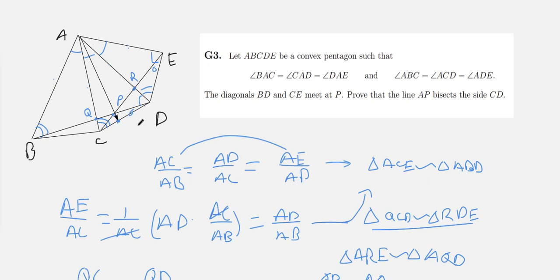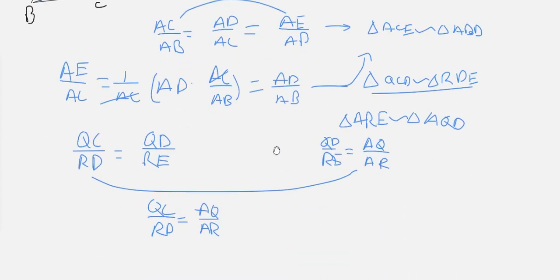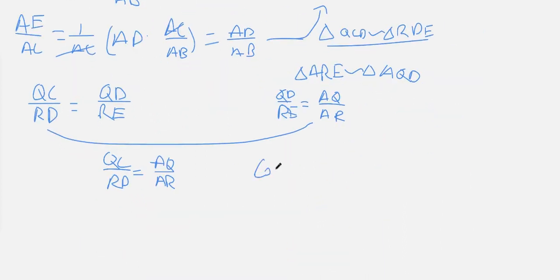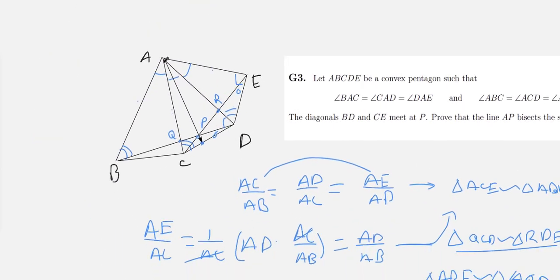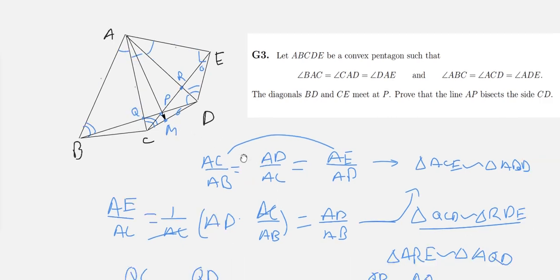So by Ceva's Theorem, which I don't know if I'm pronouncing that right, but I'll spell it. I think it's Ceva's Theorem, which states that when you have these lines that concur at a single point, there is a fact about the ratios of lengths in the triangle. So I need to mark this point where AP intersects CD. That is M.